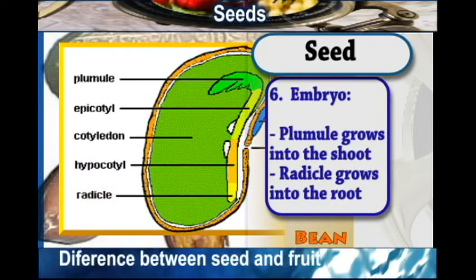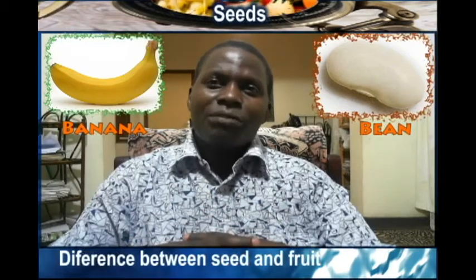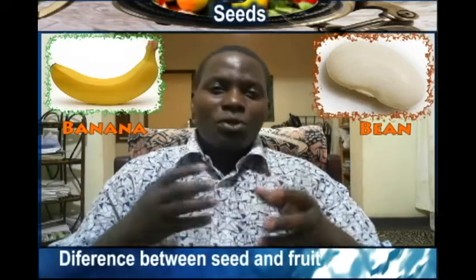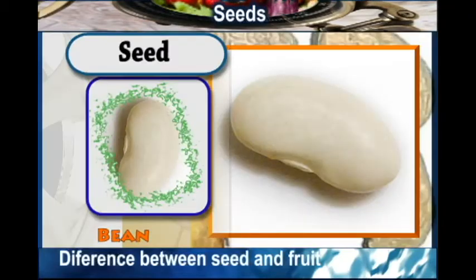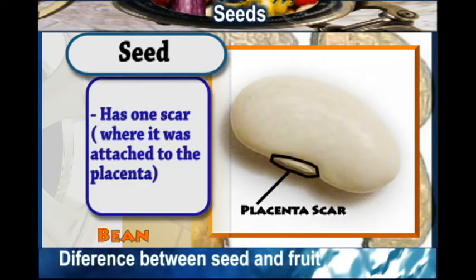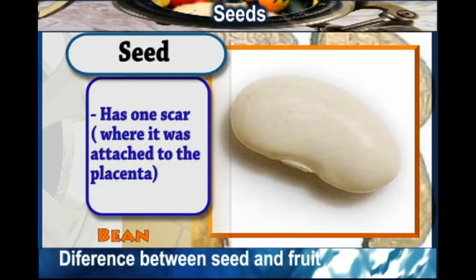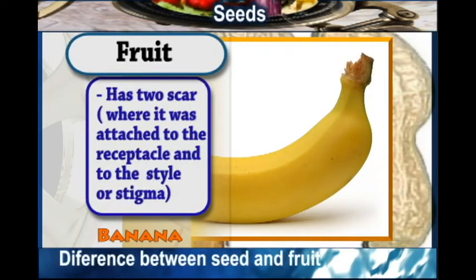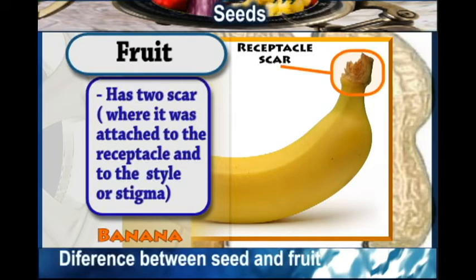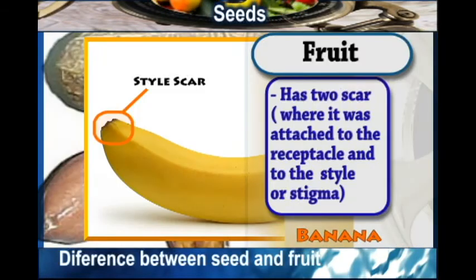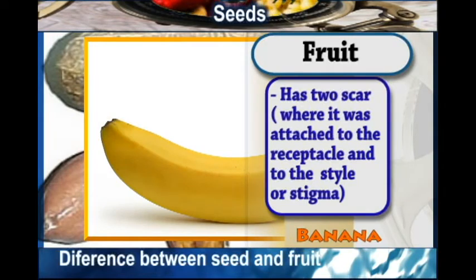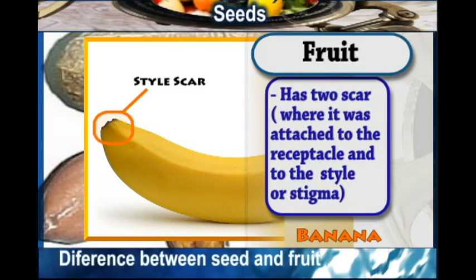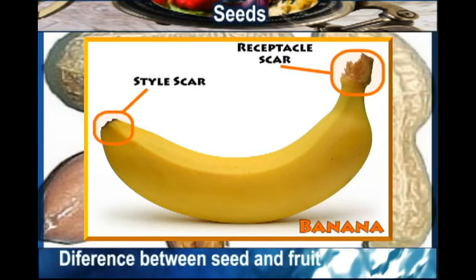Now, the difference between seeds and fruits: a seed has only one scar — that scar is where it was attached to the placenta. A fruit, on the other hand, usually has two scars — one where it was attached to the receptacle and the other representing the remains of the style or stigma.